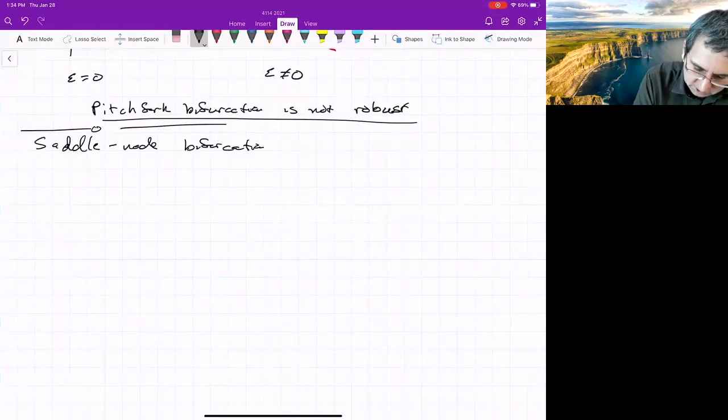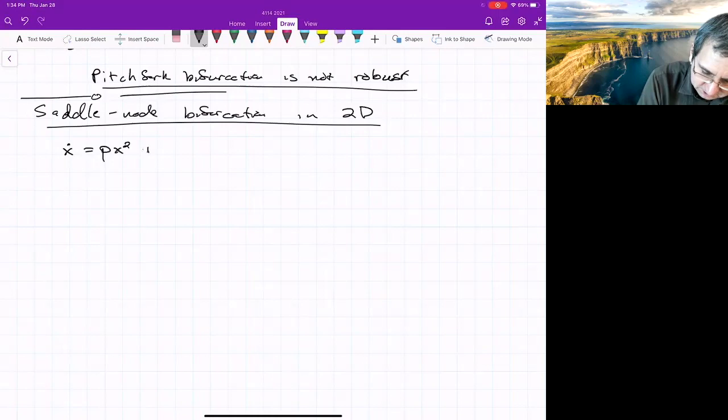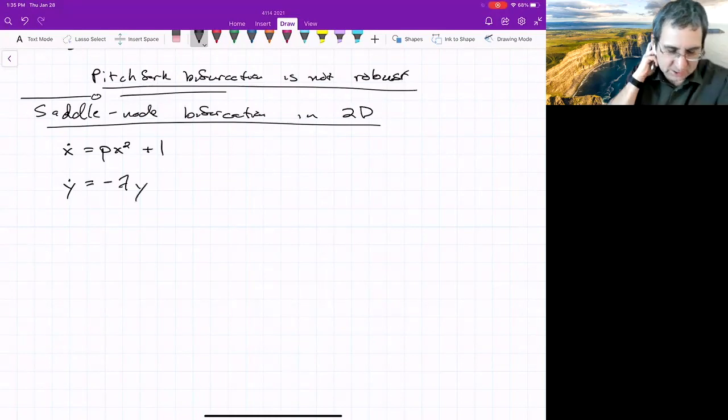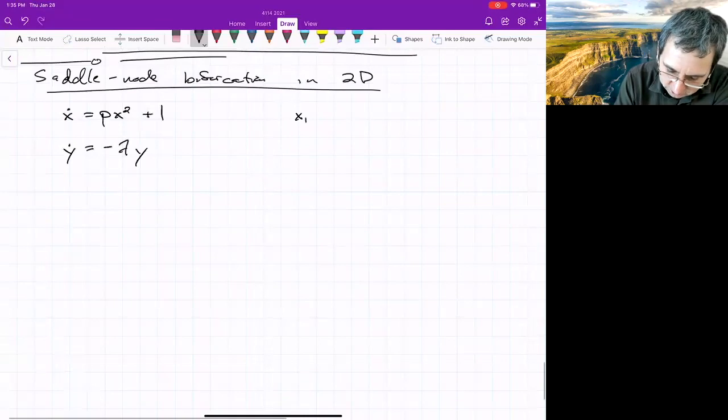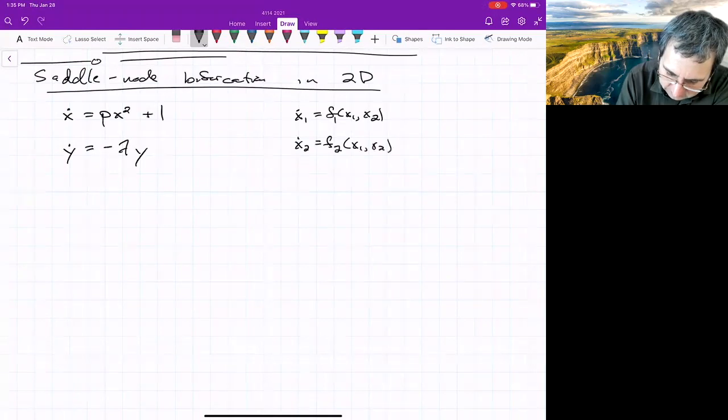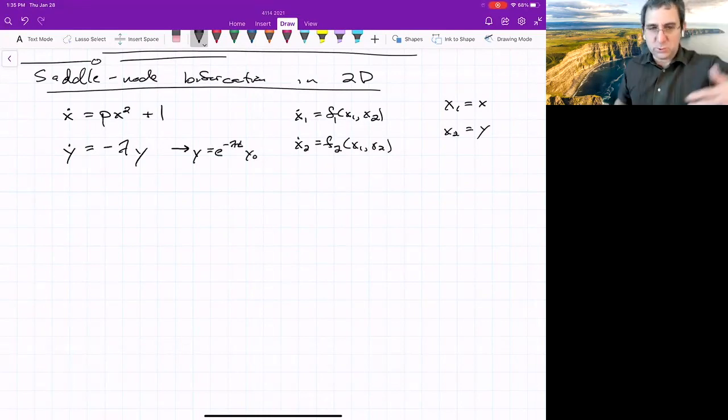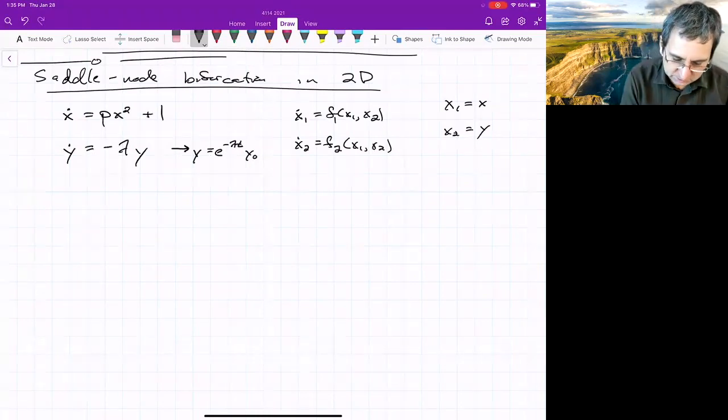Saddle node bifurcation in a 2D analytical version. X dot equals P X squared plus one, Y dot equals negative lambda Y. So this is of that form that I showed the first time where it's like X one dot equals F one of X one, X two, X two dot equals F two of X one, X two. And here we've just, I've called X one X and X two equal to Y. So it's in that form. This second ODE is easier to solve because we know Y as a function of time is going to be e to the negative lambda T times Y not.